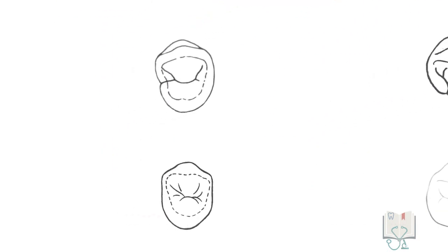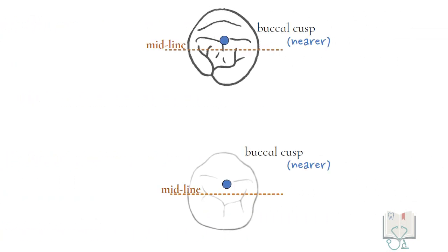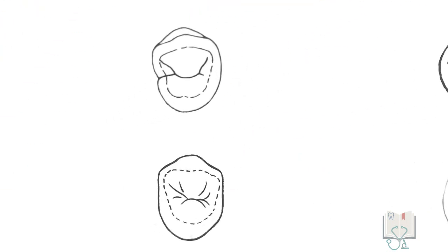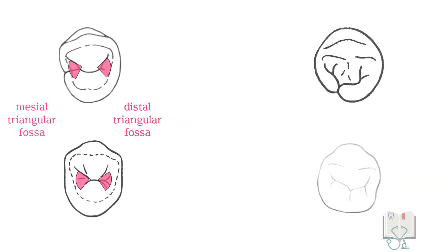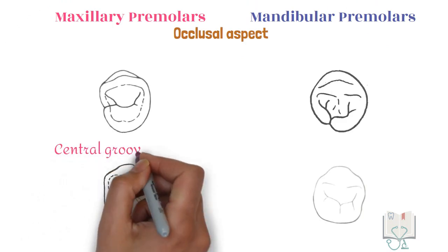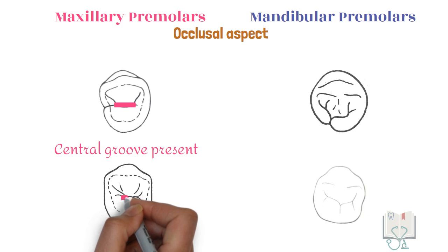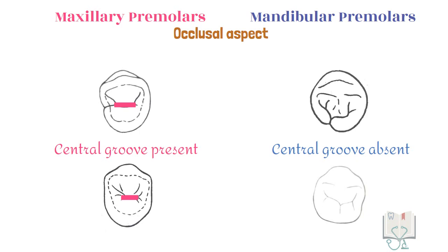In maxillary premolars, the buccal cusp and lingual cusp are at equal distance from the center of the tooth, whereas in mandibular premolars the buccal cusp is nearer to the midline than the lingual cusp. Both maxillary premolars have mesial and distal triangular fossae, but in the mandible only the second premolar has two triangular fossae; the first premolar has a mesial fossa and distal fossa which are not triangular but are linear and circular in shape. In both maxillary premolars, a central developmental groove runs mesiodistally between the two cusps, whereas in both mandibular premolars no central developmental groove is present.